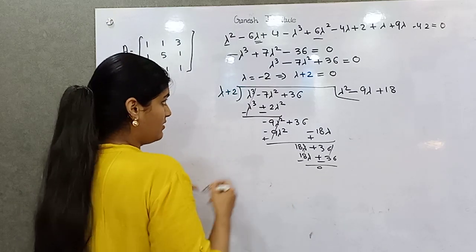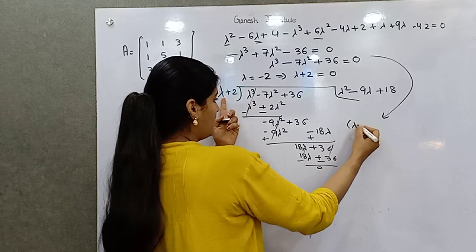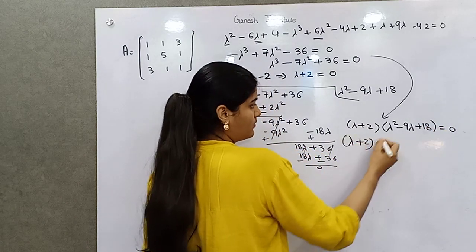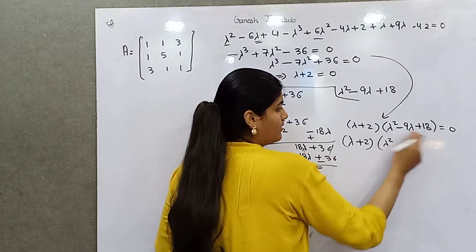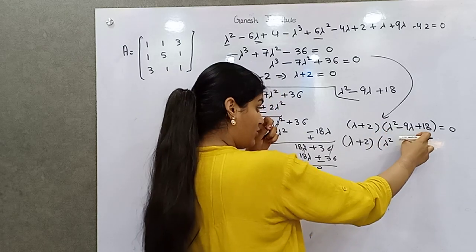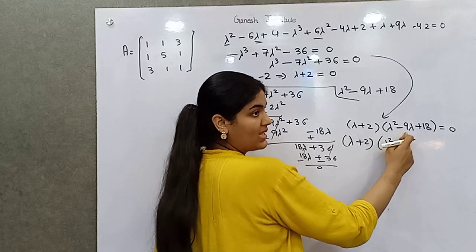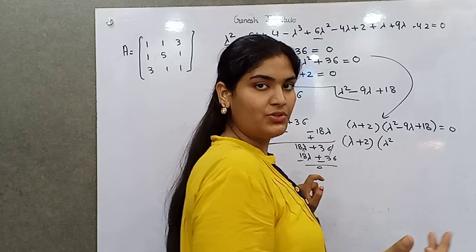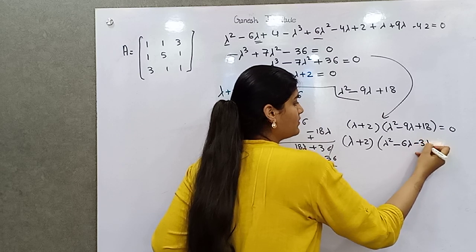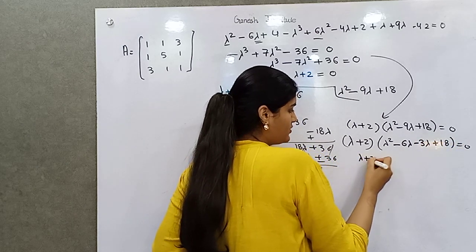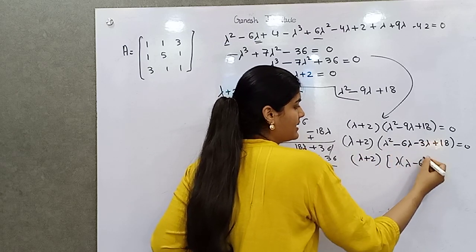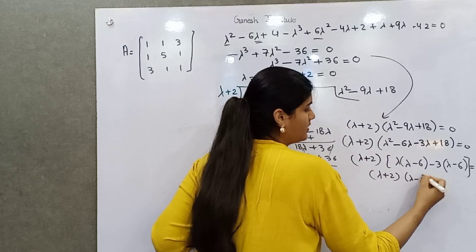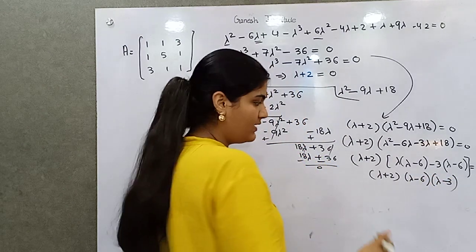The dividend splits into divisor times quotient plus remainder, which is zero. So lambda plus 2 times the quotient equals zero. To factor the quadratic, multiply the highest-power coefficient by the constant: 18 times 1 is 18. Split 18 as 6 and 3 (since 6 + 3 = 9). This gives (lambda + 2)(lambda - 6)(lambda - 3), so eigenvalues are lambda = -2, 6, and 3.